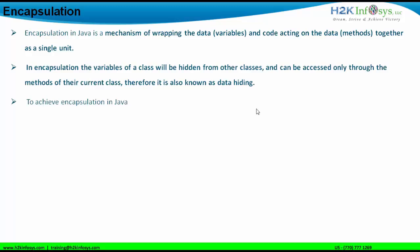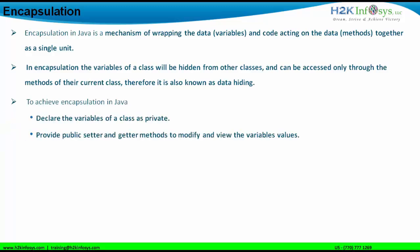To achieve encapsulation in Java, we first declare the variables of a class as private. Then we provide public setter and getter methods — with public access specifier — to modify and view the variable values. The set method is to set the variable data and the get method is to get the variable data.